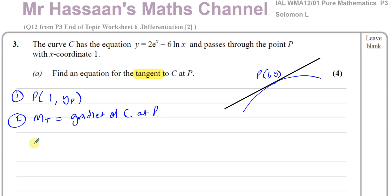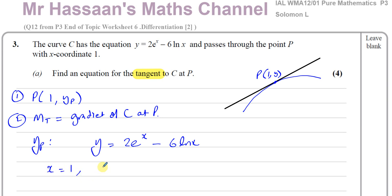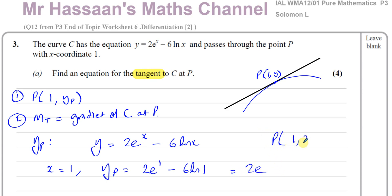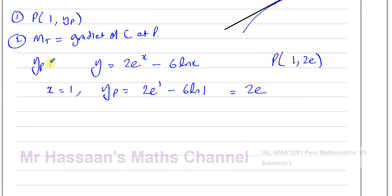Let's first find the y-coordinate of P. We know y equals 2e to the power of x minus 6 ln(x). At P, x equals 1, so the y-coordinate is 2e to the power of 1 minus 6 times ln(1). Since ln(1) is 0, you're left with 2e. So the coordinates of P are (1, 2e) in exact form.